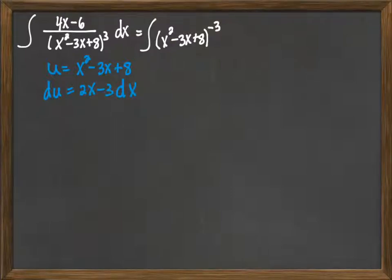And then I need a 2x minus 3 to go with my dx, and I look at what I have. I have that 4x minus 6, but I say well if I factor out a 2, then I'll actually have 2x minus 3 there.